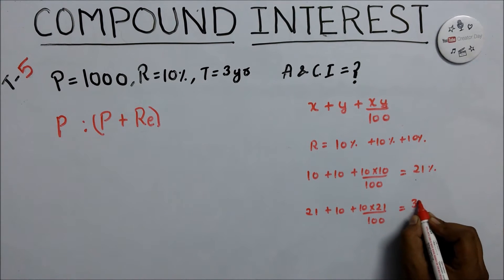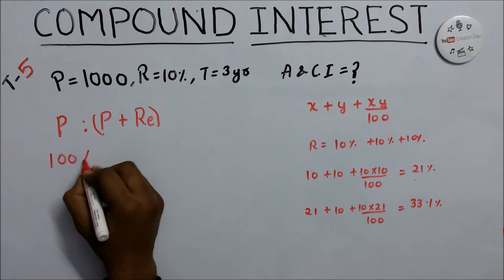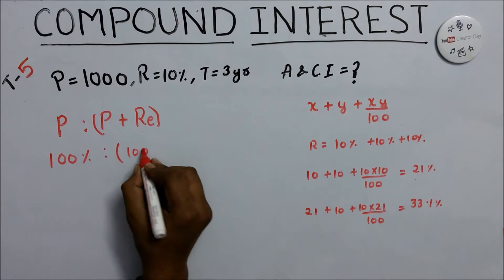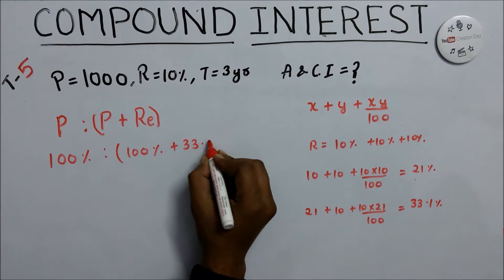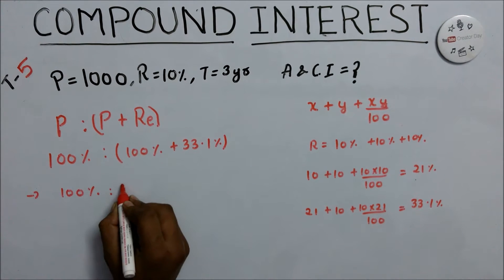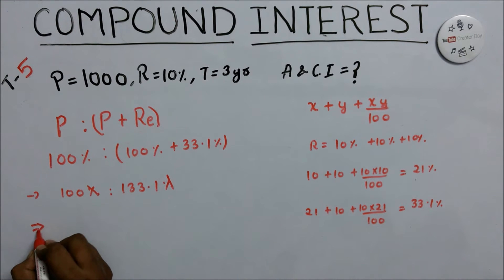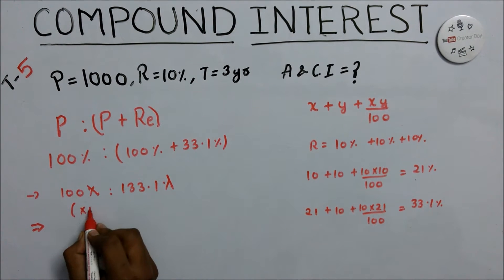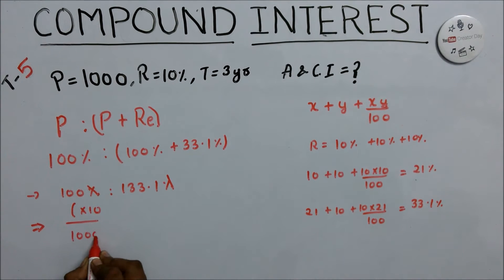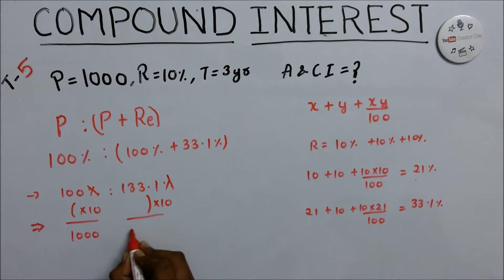This gives 33.1% equivalent rate of interest for three years. Now we take P equals 100%. The ratio is 100% to 133.1%. Since principal is 1000, we multiply 10 in both: 100 times 10 equals 1000 as principal, so 133.1 times 10 equals 1331 as amount for three years.